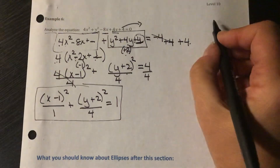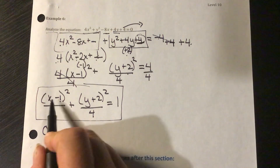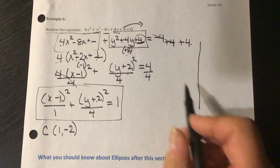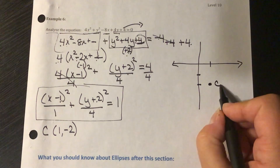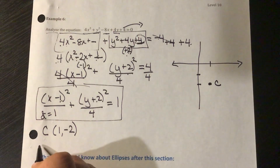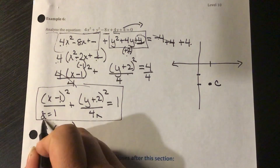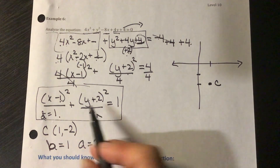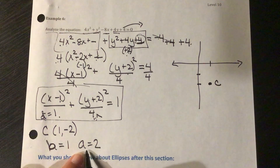Analyzing: first, the center is at (1, -2). The larger denominator is 4, which is underneath the y term, so this is a tall ellipse. That means a squared equals 4, so a equals 2, and b squared equals 1, so b equals 1. The a value of 2 means we go 2 units up and down from the center along the major axis.